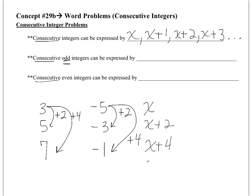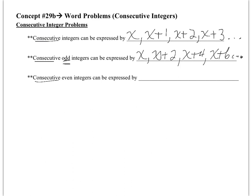If I continued the pattern, it would be x plus 6 and so on. So go ahead and write down the consecutive odd integers: x, x plus 2, x plus 4, x plus 6, and so on.